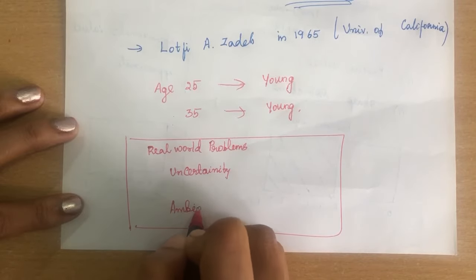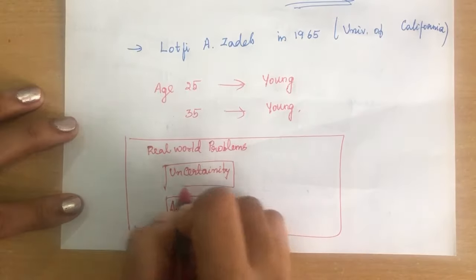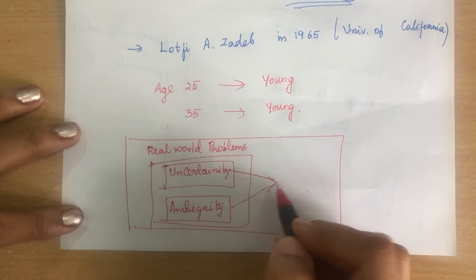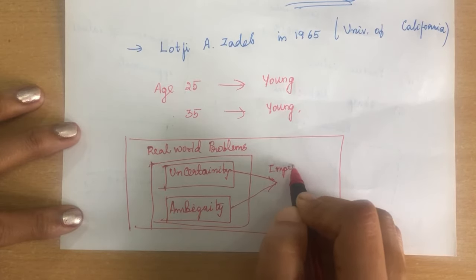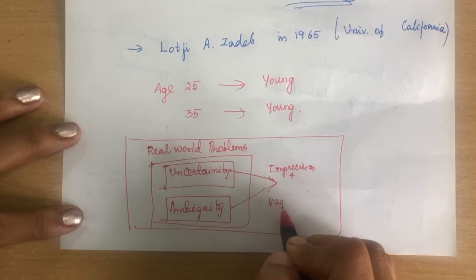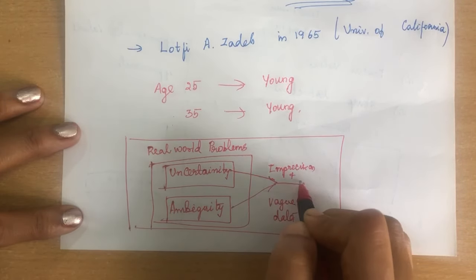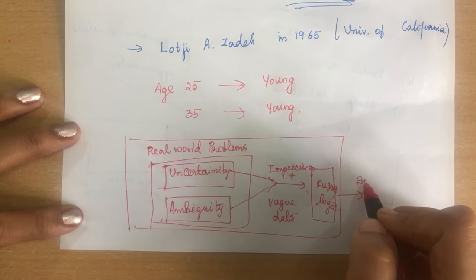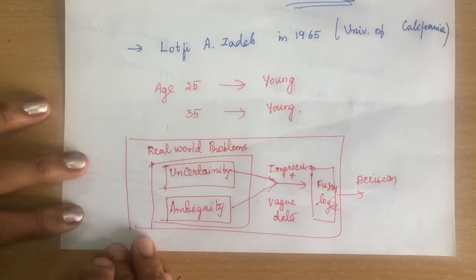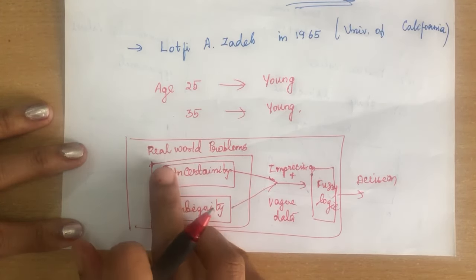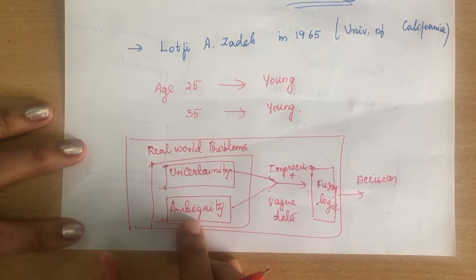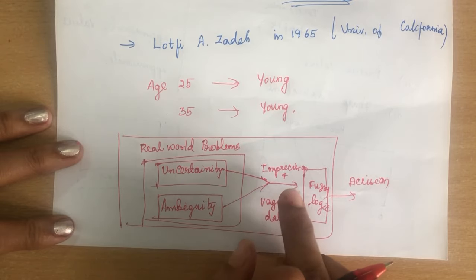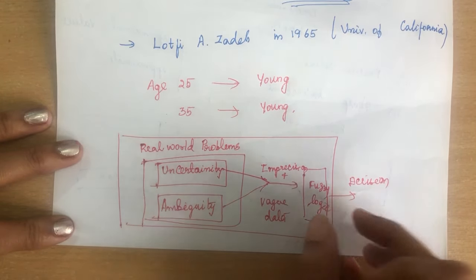It is not clear and it is very vague. In those types of problems, we can derive solutions using fuzzy logic. It handles vague and imprecise data. All these problems can be solved using fuzzy logic, and we can derive a conclusion and make a decision. Many researchers use fuzzy logic in their problems because in real-world problems, uncertainty and ambiguity exist and cannot be solved using Boolean logic.